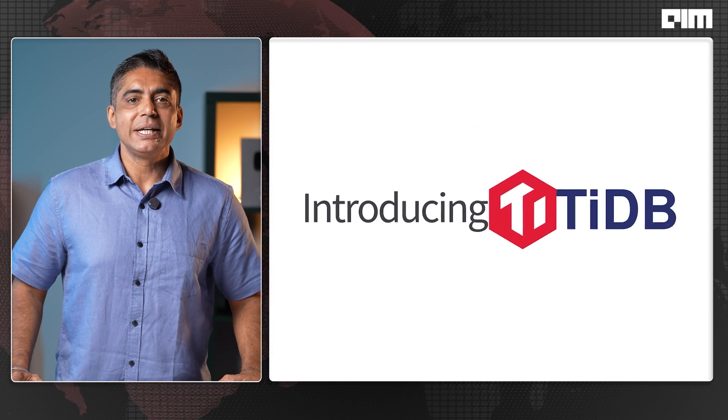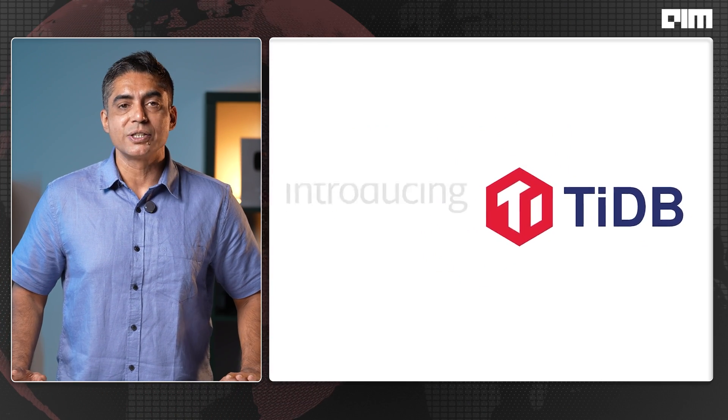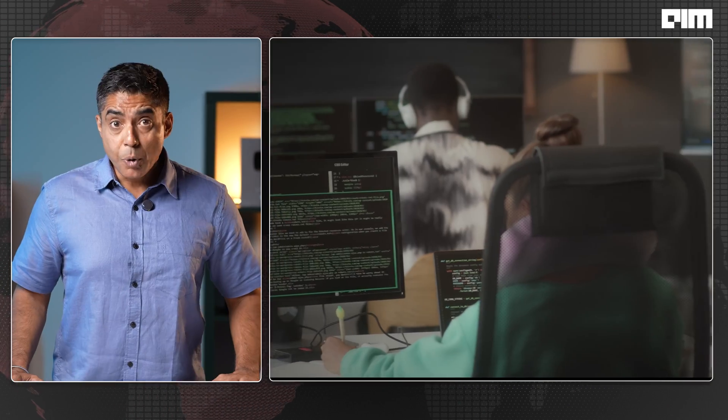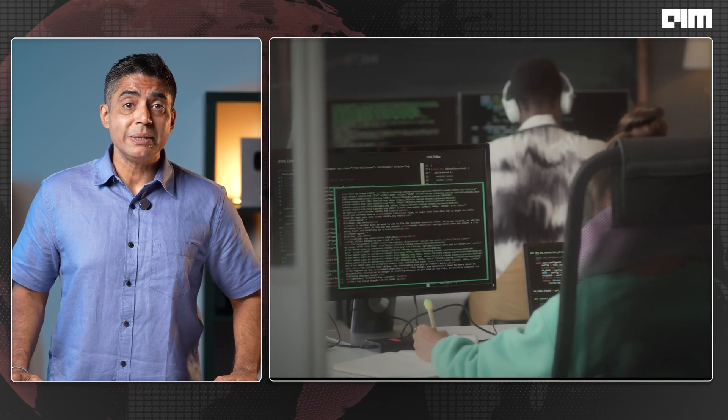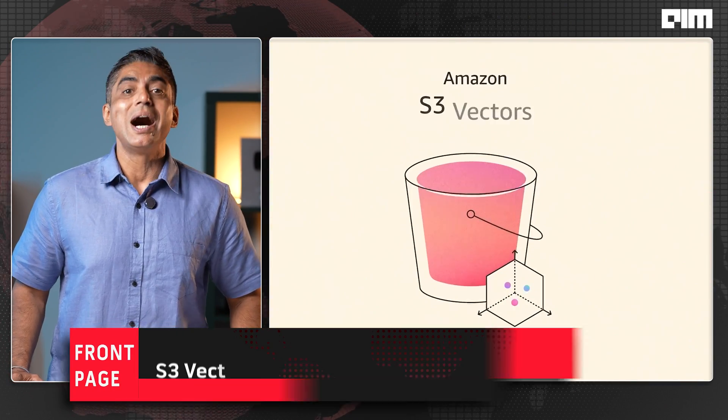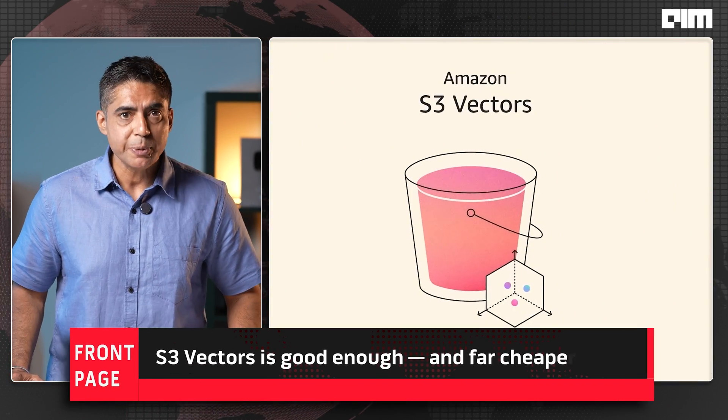Postgres has pgvector, MongoDB calls vector search just indexing, CockroachDB, TiDB, they've all added vector support. In short, vector search is becoming a feature, not a product.